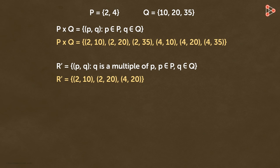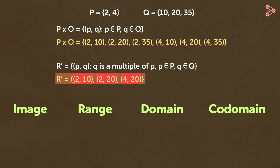Now let's talk about the terms image, range, domain and co-domain. We know that the set R' has three ordered pairs: (2,10), (2,20) and (4,20).